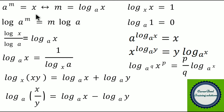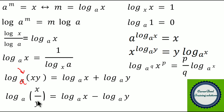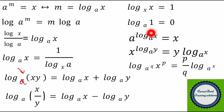Let me summarize. A power M equal to X can be written as M equal to log of X to the base A. Log of A power M can be written as M into log A. Log X by log A can be written as log X to the base A. Log X to the base A can be written as 1 by log of A to the base X. Log of X times Y to the base A equals log X to the base A plus log Y to the base A. Log of X by Y to the base A equals log X to the base A minus log Y to the base A. Log X to the base X equals 1, and log 1 always equals 0 — log 1 is not 1, it is 0.